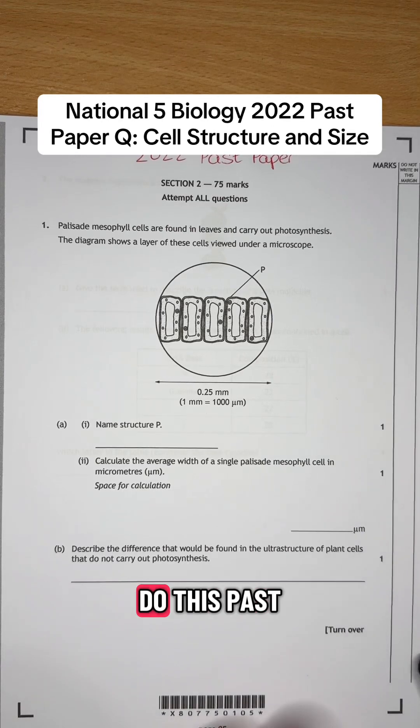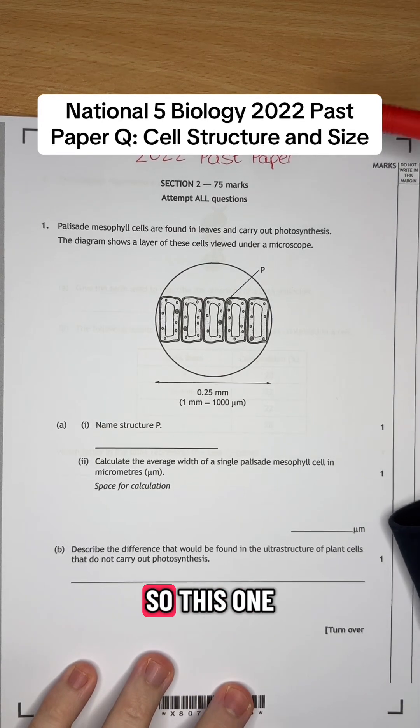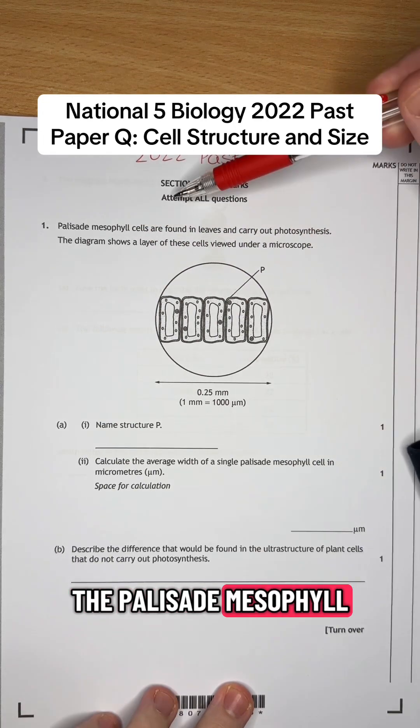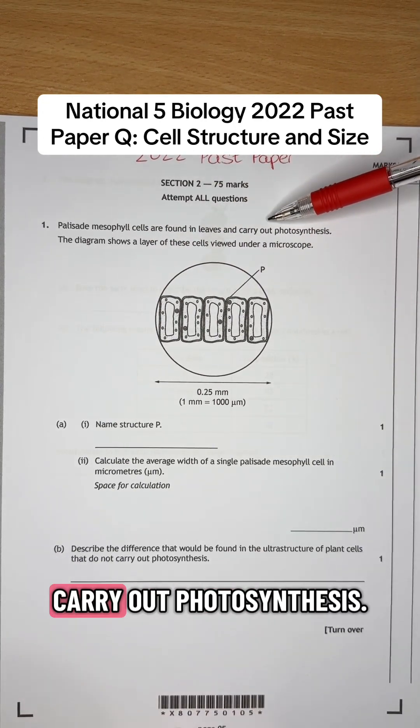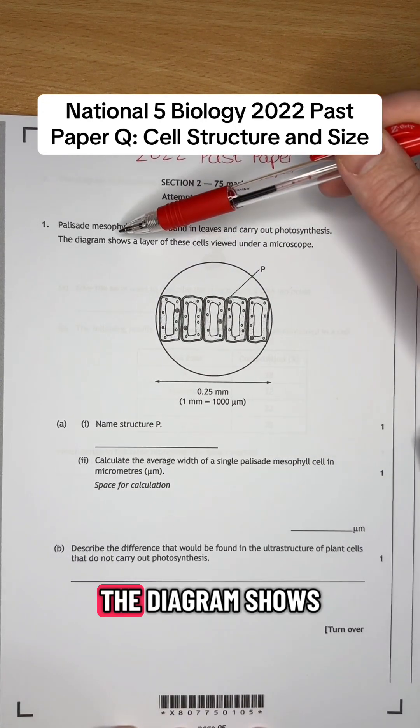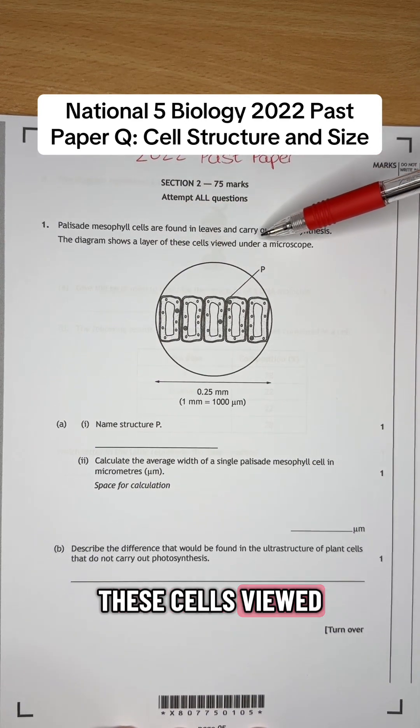National 5 biologists, do this past paper question with me. So this one says the palisade mesophyll cells are found in leaves and carry out photosynthesis. The diagram shows a layer of these cells viewed under a microscope.